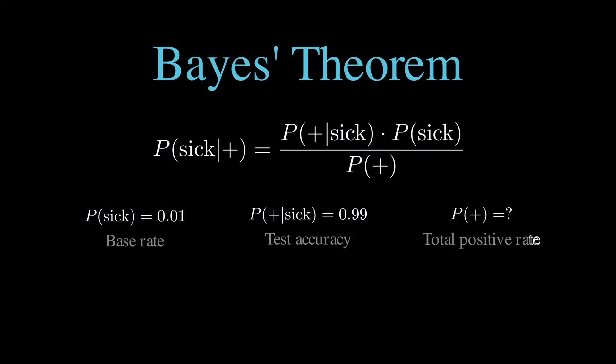Then we have P(+), the evidence, which is the total probability of testing positive, regardless of whether you're sick or healthy. To find the probability of a positive test, we need to consider both ways someone can test positive.